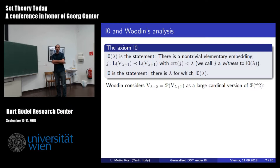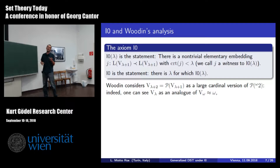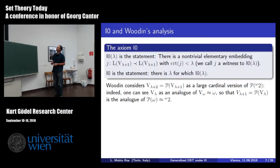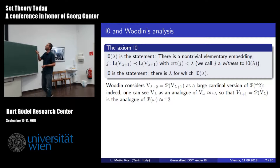This is very close to the Kunen inconsistency. Kunen says you cannot have an embedding from V_{lambda+2} into V_{lambda+2}—I0 is just slightly below that. What is relevant to this talk is that Woodin started to consider V_{lambda+1}—the power set of V_lambda—as a large cardinal version of subsets of the reals. The analogy goes as follows: V_lambda is the analog of V_omega, because lambda has countable cofinality. And V_{lambda+1} consists of subsets of V_lambda, while subsets of omega are essentially the Cantor space.